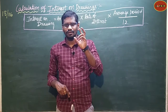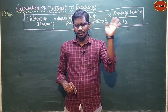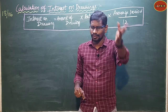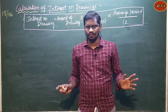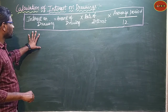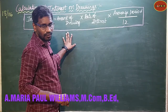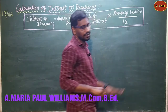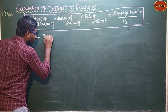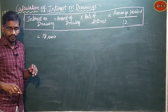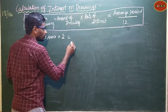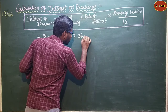Ram and Sam are partners. Ram withdraws Rs.18,000 at the beginning of each half year. We use the average period method at 10% interest on drawings per annum. One year has two half years, so 18,000 into 2 equals Rs.36,000 per annum. The formula is: interest on drawings equals amount of drawing into rate of interest into average period.